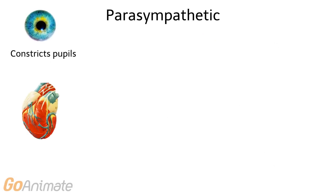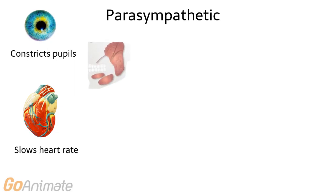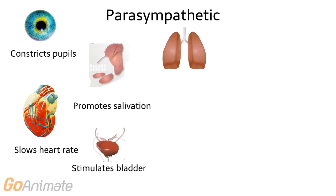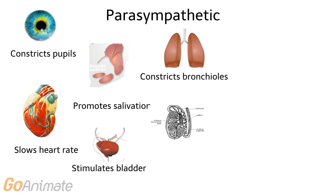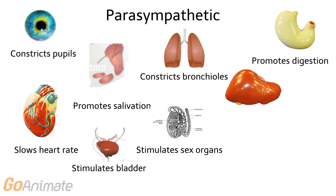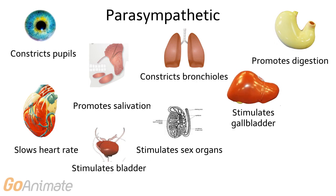The parasympathetic nervous system has the opposite effect on organs. It works to constrict the pupils, slow down the heart rate, promote salivation, stimulate the bladder, constrict the bronchioles, stimulate the sex organs, promote digestion, and stimulate the gallbladder to release bile.